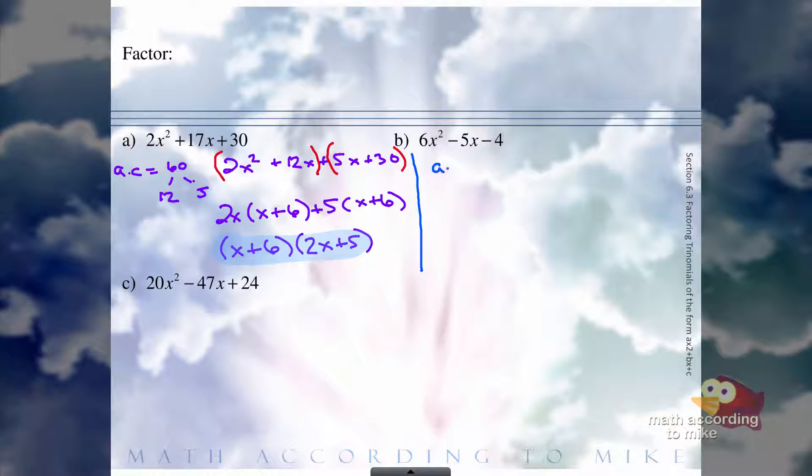So our a times c would be 6 times negative 4 is negative 24. And then the factors of negative 24 that add up to negative 5 would be negative 8 and 3. As discussed in the previous video, it's best to put the negative 1 first so that you avoid not pulling out a negative correctly.